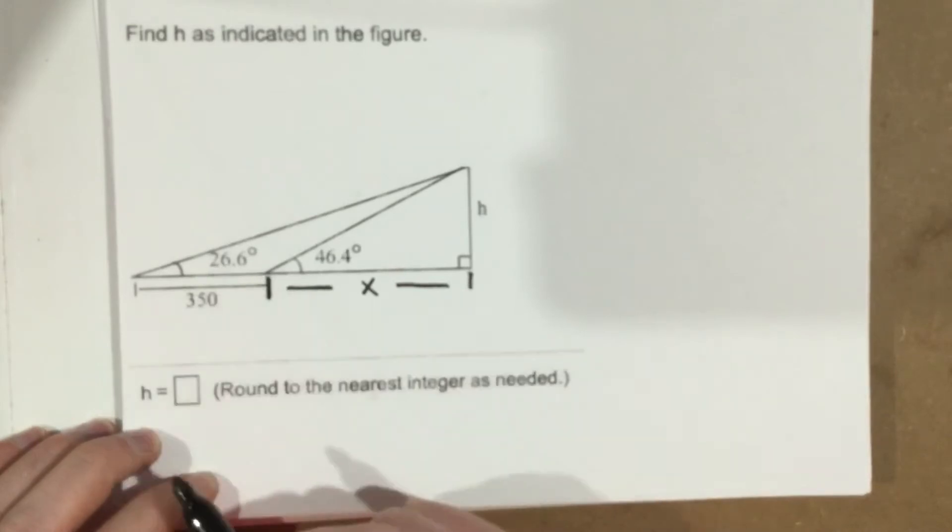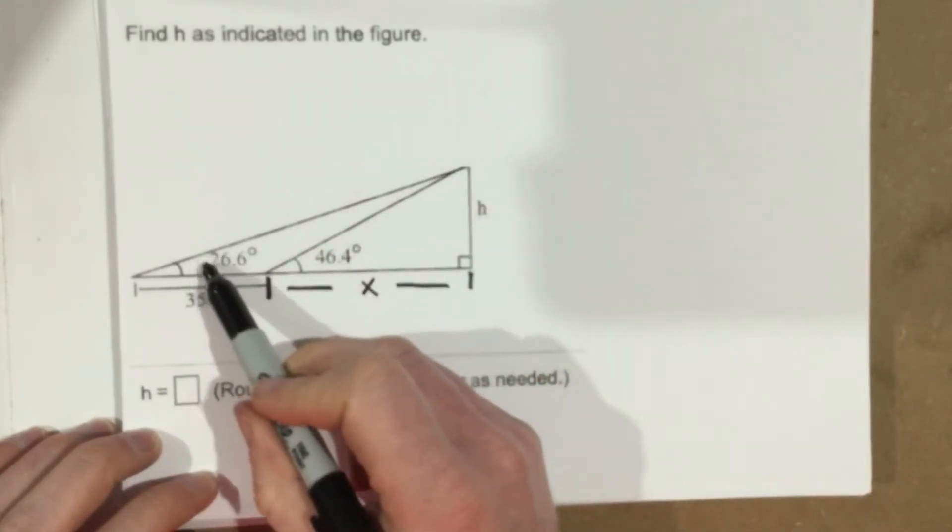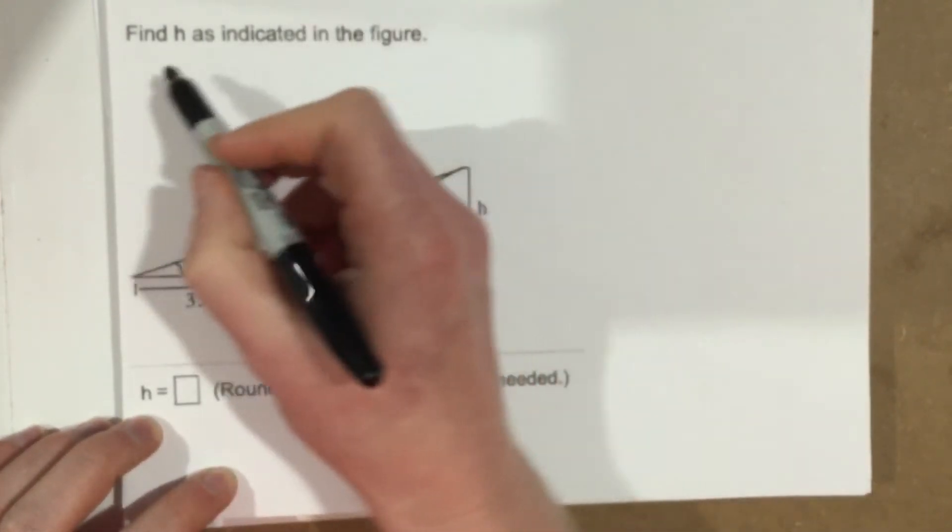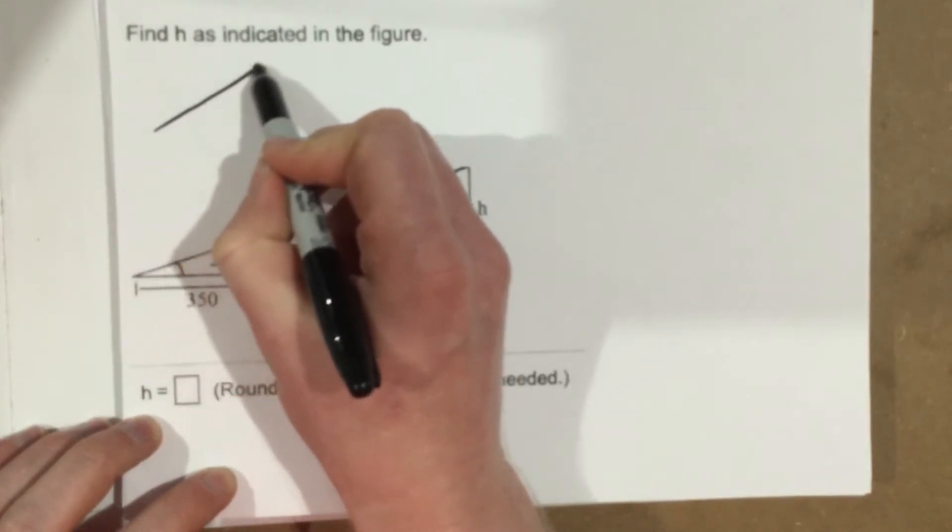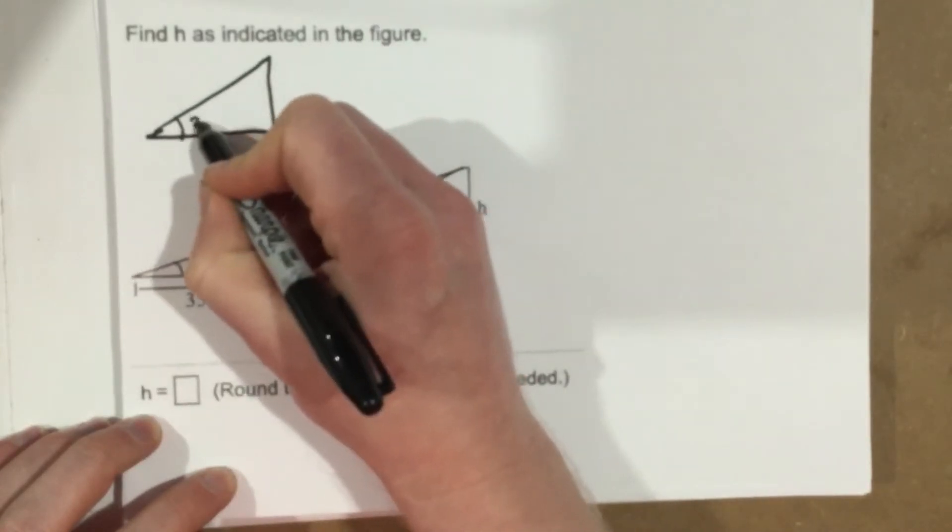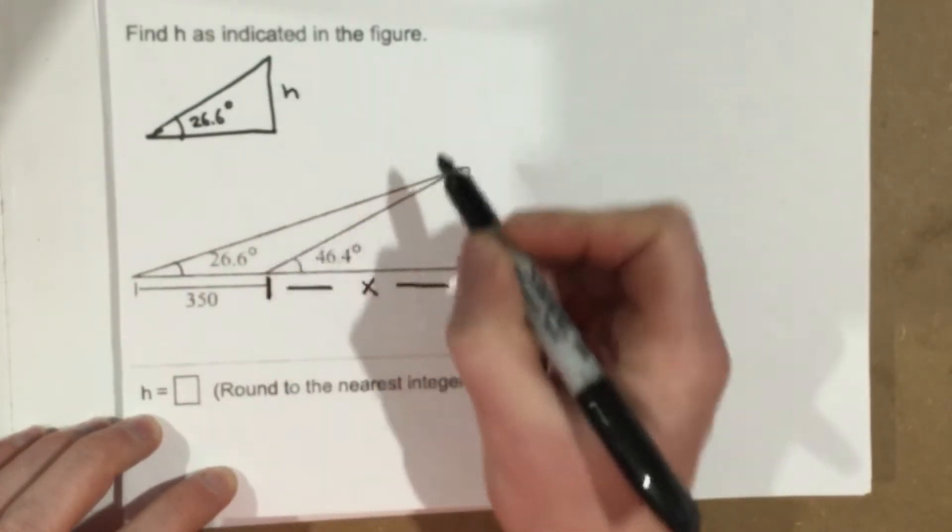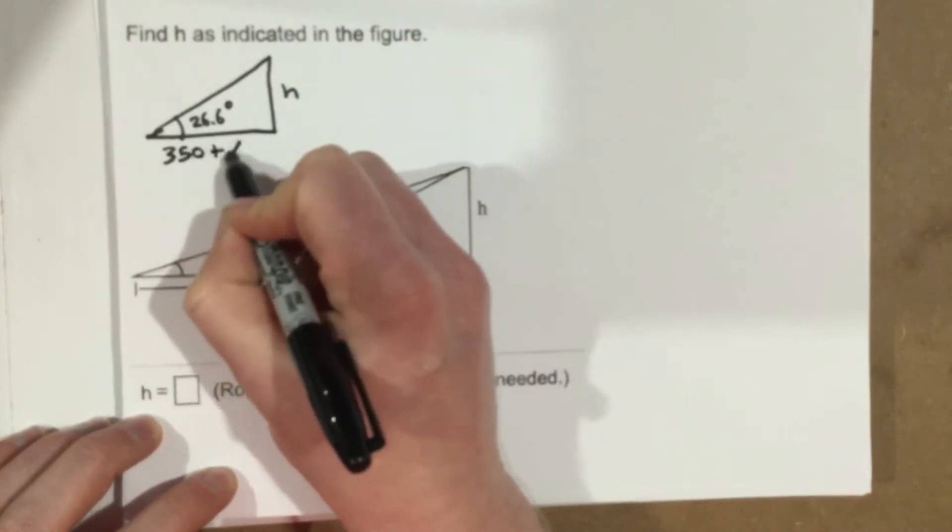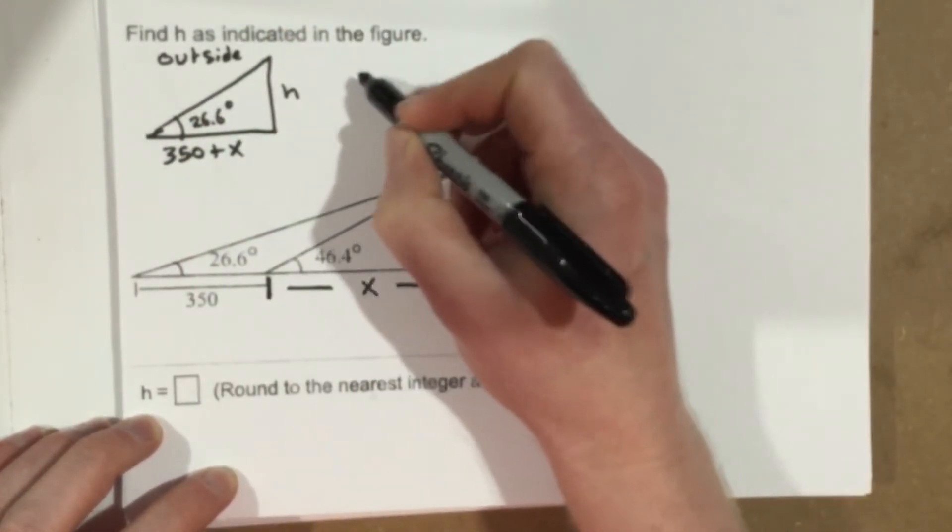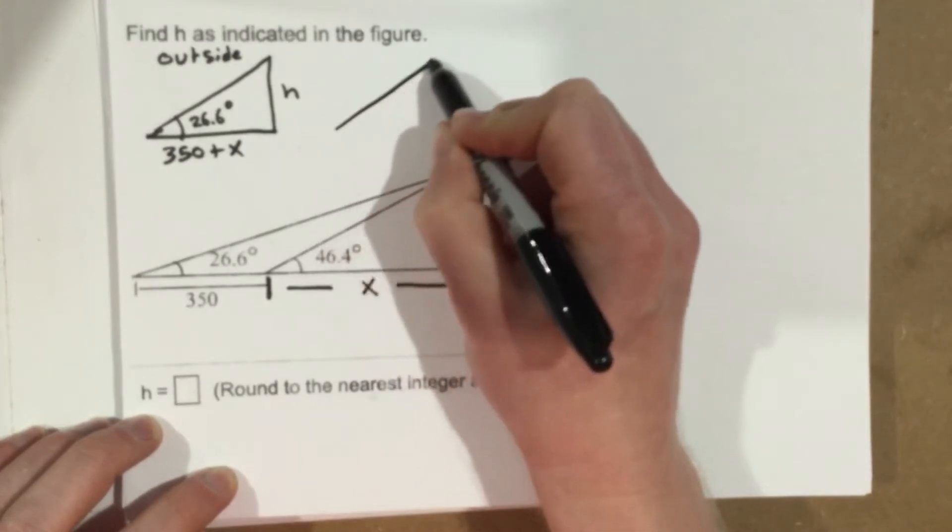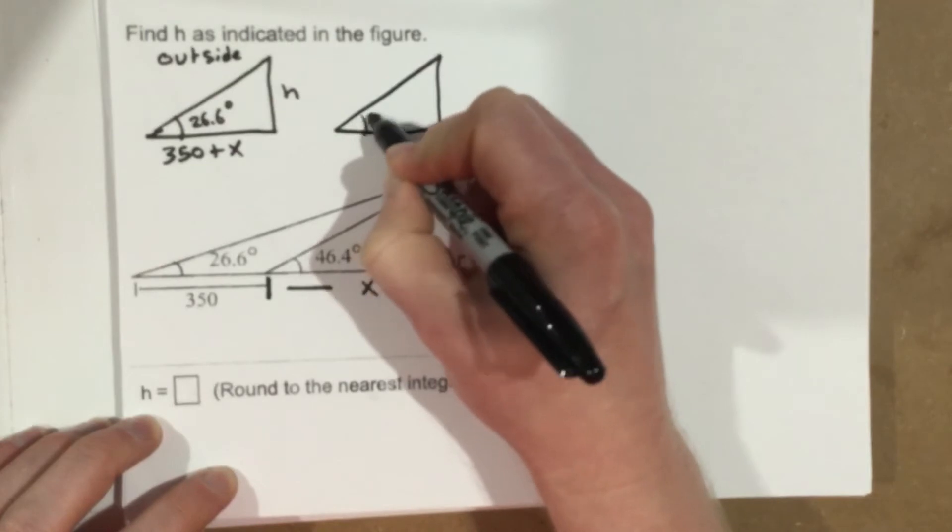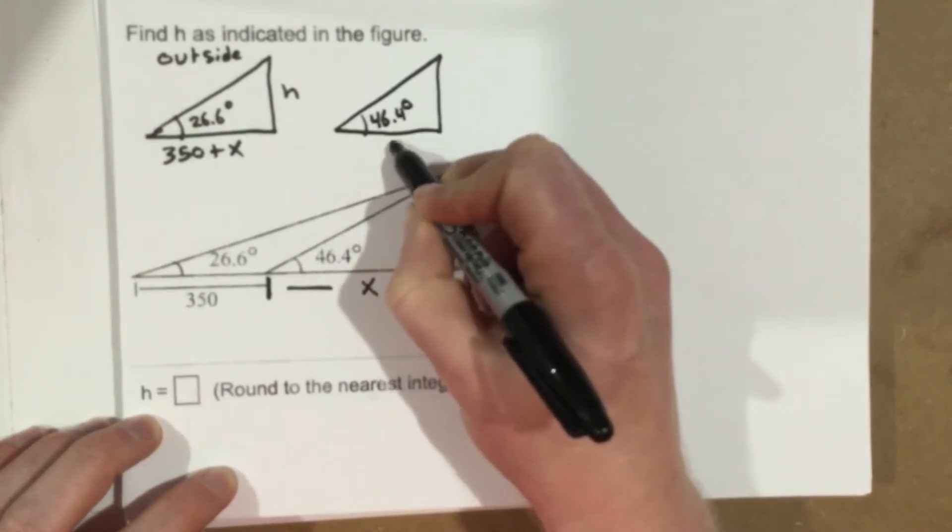So we're going to start with the outside triangle. And the outside triangle is the 26.6 degrees. I'm going to go ahead and kind of draw these figures right here. So I'm going to say this is the outside triangle and I'm going to label it. This is 26.6 degrees, this is h, and this is 350 plus x and I'm going to label it outside. And then I'm going to label the inside triangle. So I'm going to draw another one and I'm going to label it 46.4 degrees and this is x and this is h.